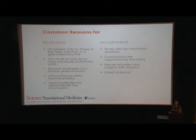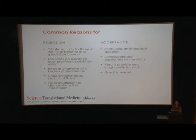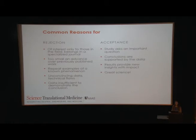Why do some papers ultimately become rejected? If the paper is of interest to only a small field — too specialized — it might be better suited for a specialty journal. If it's too small of a conceptual advance over previously published work, that could also be a reason for rejection. If it's confirmatory, just repeating examples of something that's already known. If the data are unconvincing or insufficient to support the conclusions and claims are being overstated. Conversely, what makes a paper land in the acceptance pile: the study asks important questions, conclusions are well supported by data, the experimental design is very sound, the results provide new insights with impact to the field and to translation of clinical therapies — and, of course, great science.